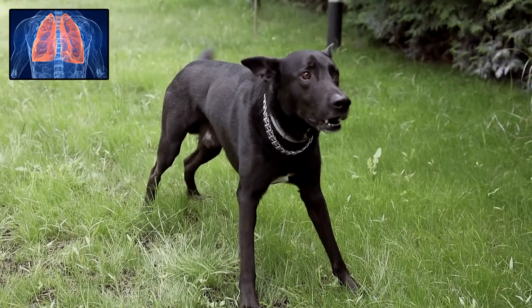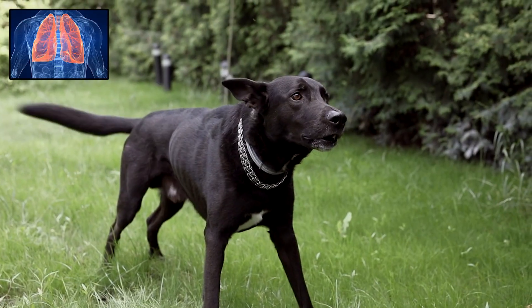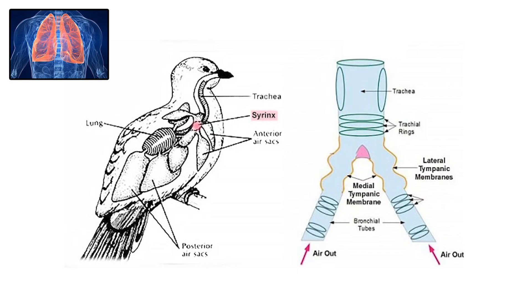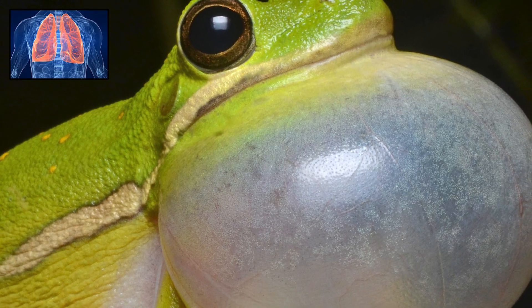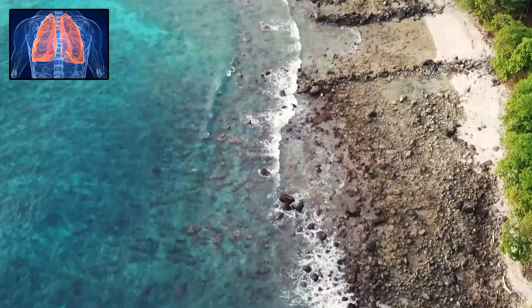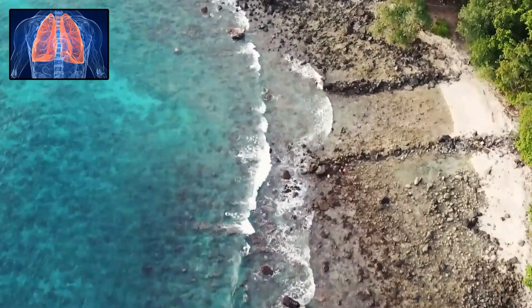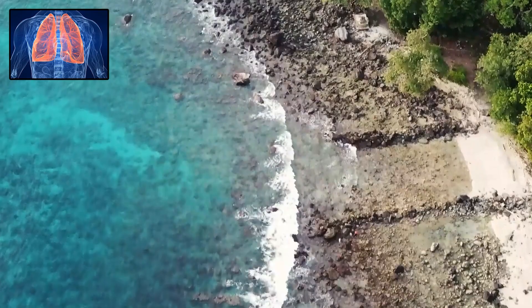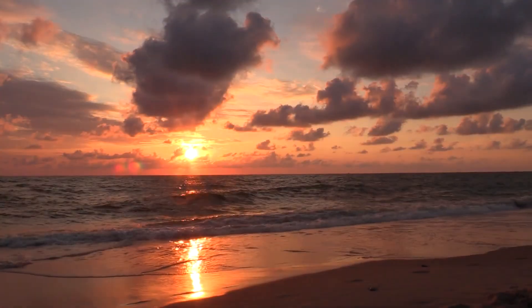Lungs also influence vocalization. Many animals use air pushed from the lungs to create sound. In humans, this forms the basis of speech. Birds have a lung structure called the syrinx, which allows for complex songs. Frogs inflate vocal sacs with air from their lungs to produce mating calls. From ancient waters to open skies, the development of lungs tells a story that took millions of years, making it one of the most interesting aspects of animal evolution.